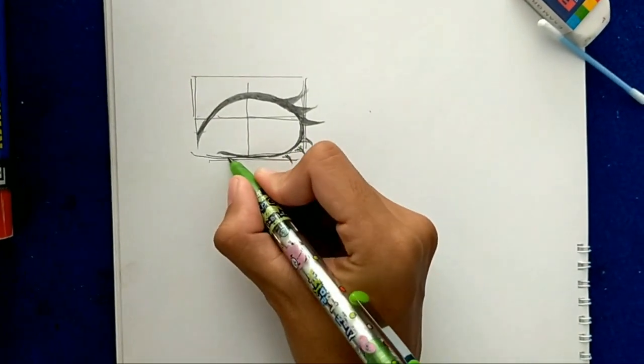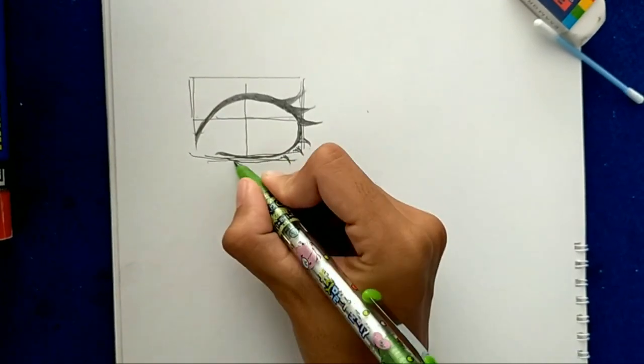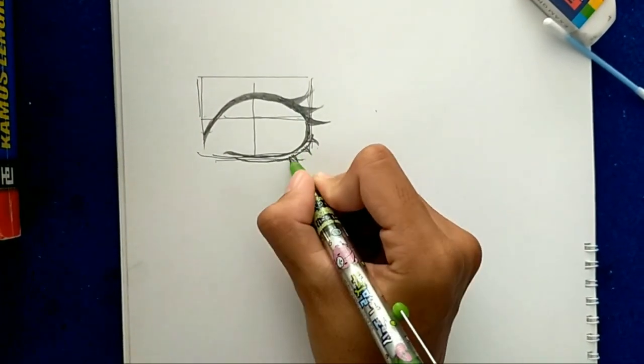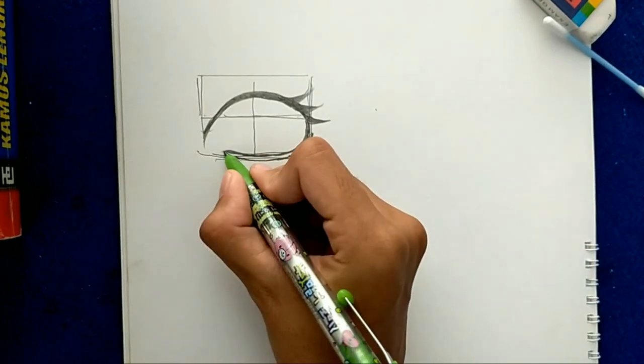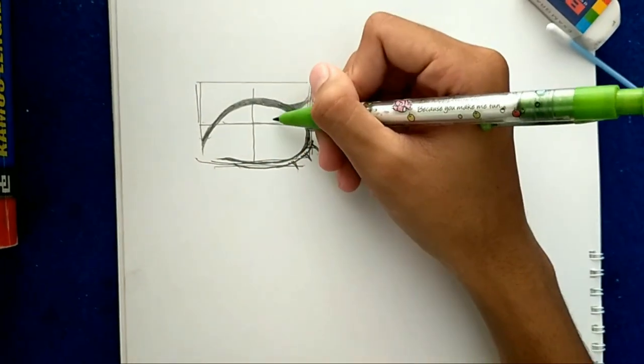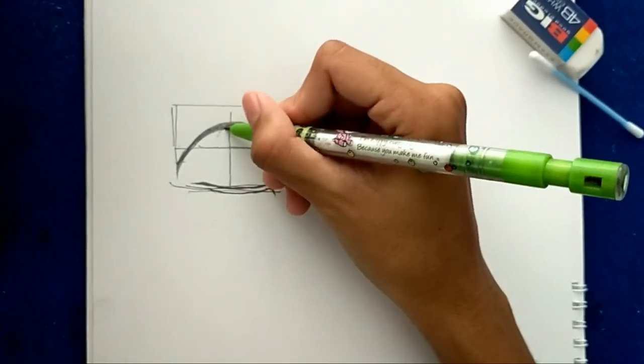Now draw a line like this at the bottom of the eye. Now make a big circle like this as the eyeball.